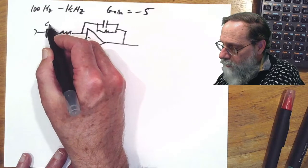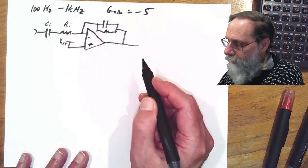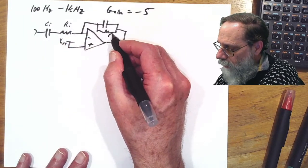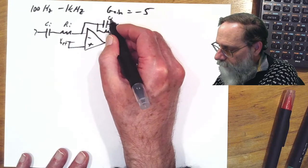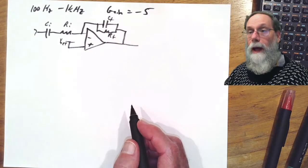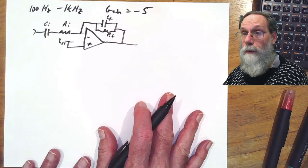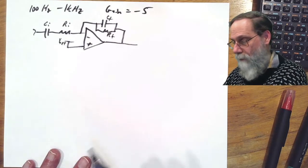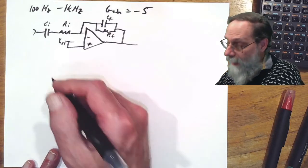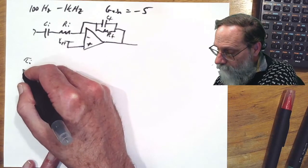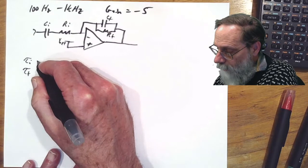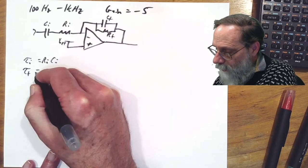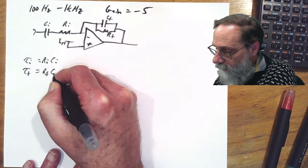Let's give some names here, Ci and Ri for the input, Rf and Cf for the feedback. And we have some formulas. We had formulas for Tau I and Tau F, where Tau I is just Ri Ci and Tau F is Rf Cf.